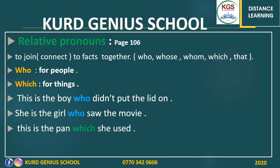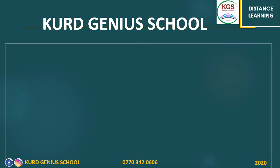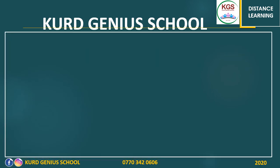Now for 'which' — we use it for things. Example: 'This is the pan which she used for cooking.' Another example: 'The photos which I attached' — here I'm talking about photos, which are things, so I use 'which'. Remember: 'who' is for people, 'which' is for things. There are exercises on page 106 — they are easy, just make sentences and complete them.